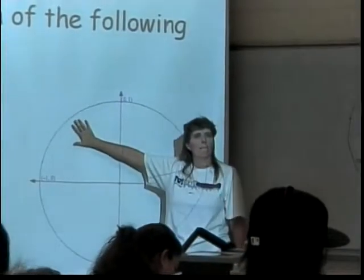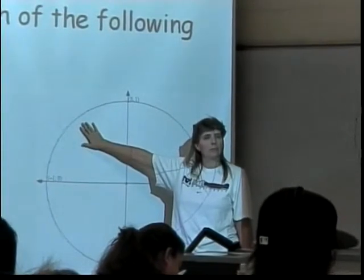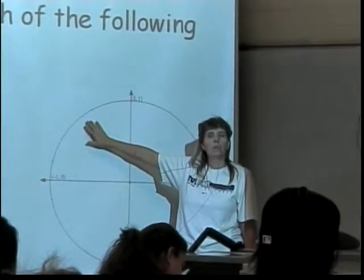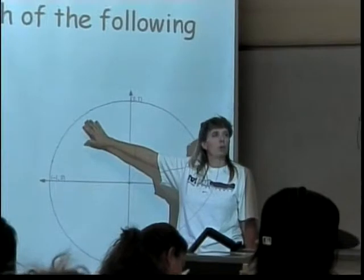What about in quadrant 2? Negative. Why is it going to be negative? Because only one of them is negative. Because what? Because only one of them is negative.